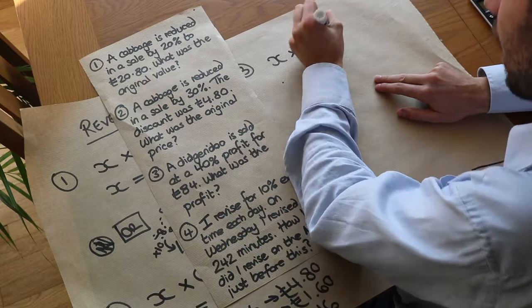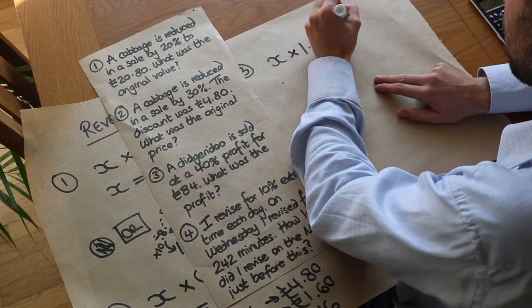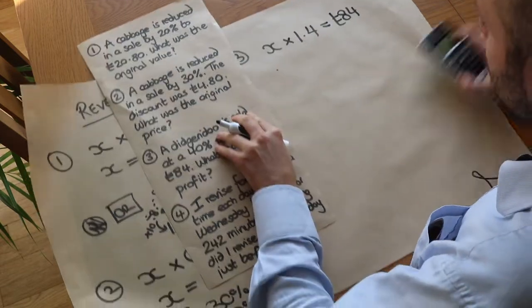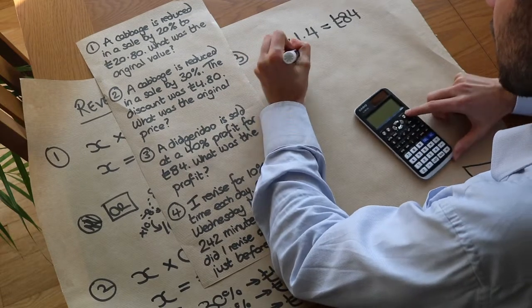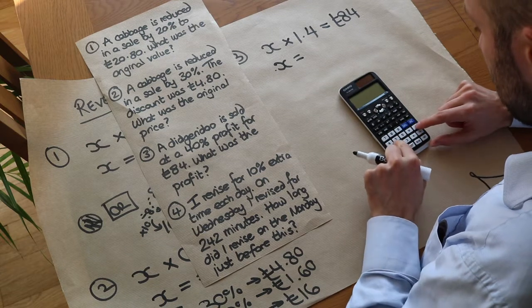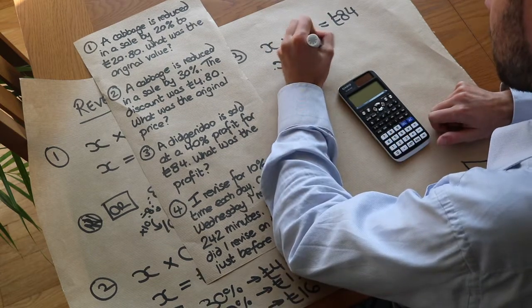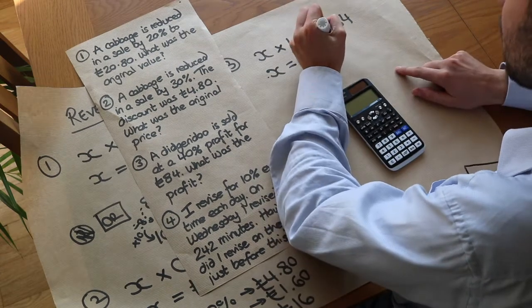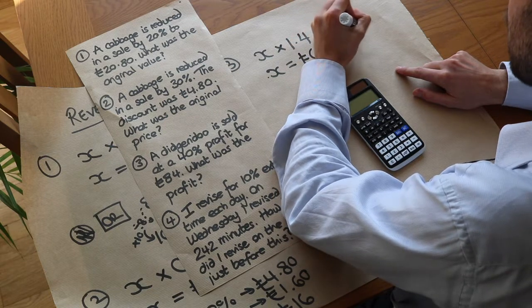And that gives us our new value of £84. That's the value after the 40% profit. So we do the usual thing. We just divide by the 1.4 to undo the times by 1.4. And we get £60. So that was the original value.